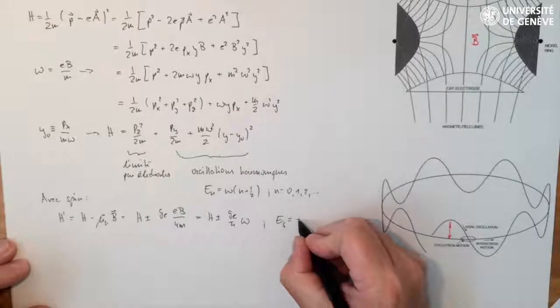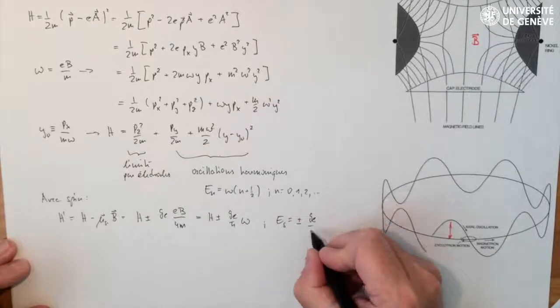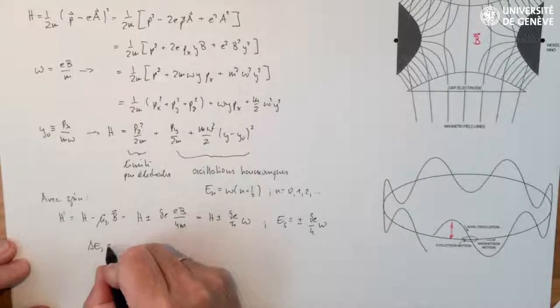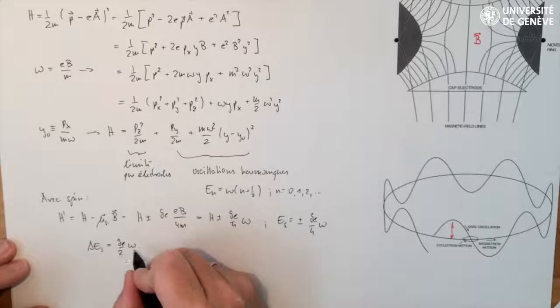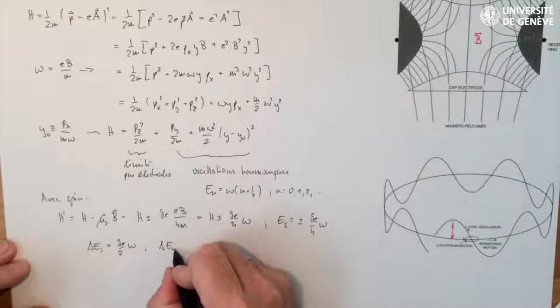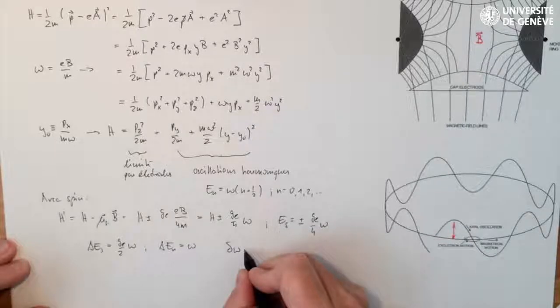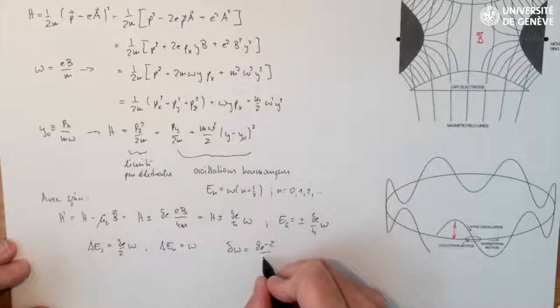This results in a level spacing due to spin of g_e over 2 times omega compared to one level spacing by the cyclotron motion, which is delta E_n equal omega. The difference between these two level spacings directly measures (g_e minus 2) divided by 2.